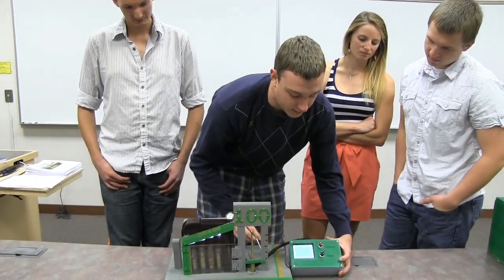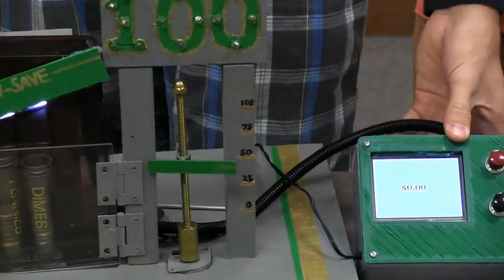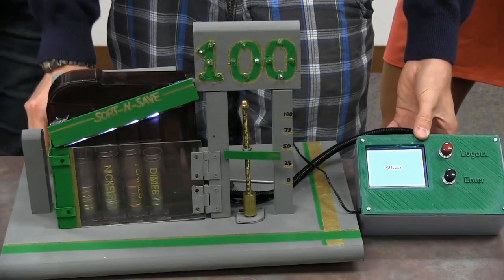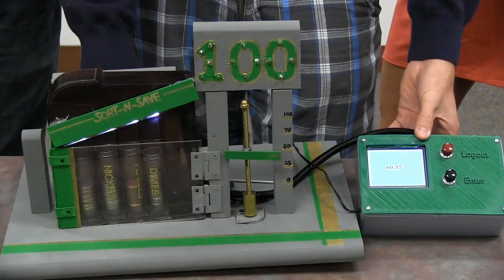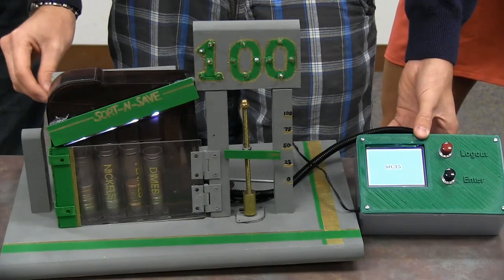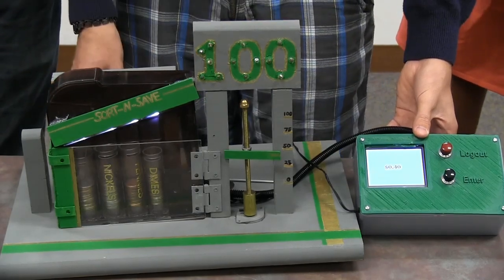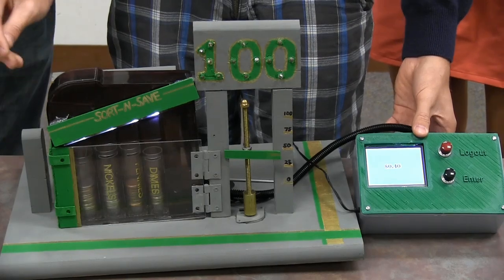If I want to go ahead and add some money, here's the add money screen. There's a quarter, nickel, nickel, penny.